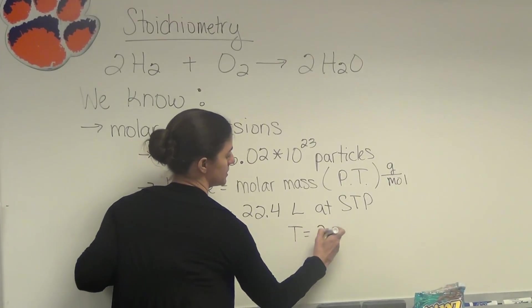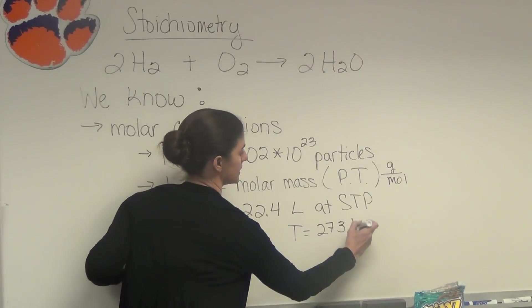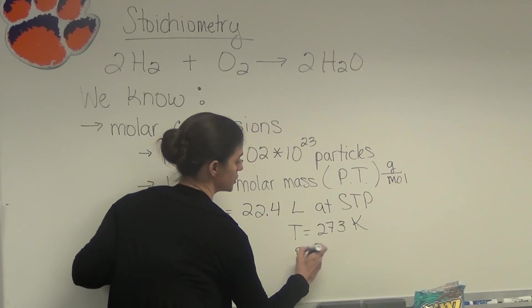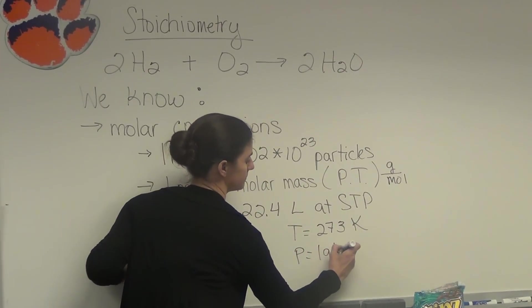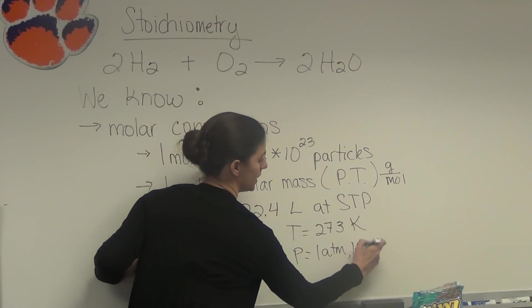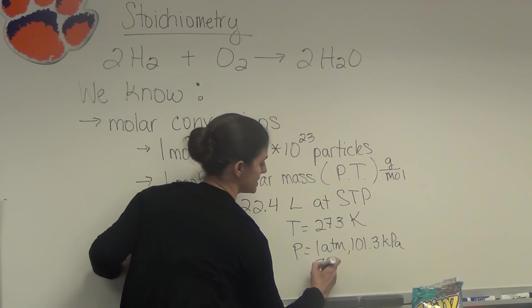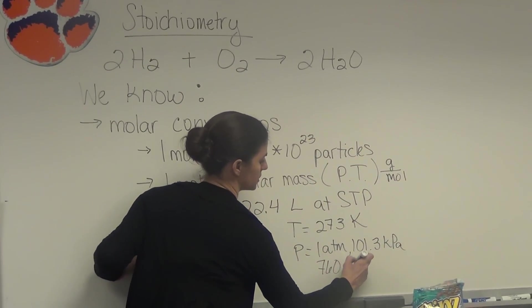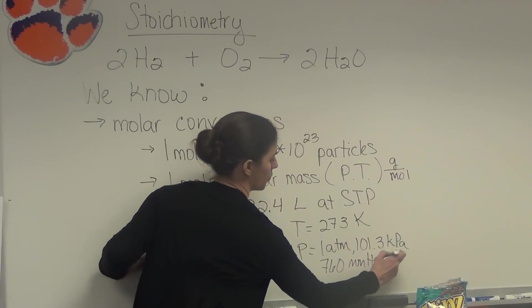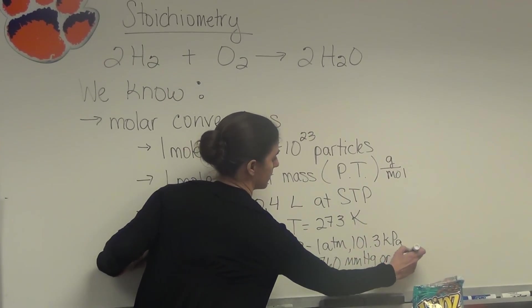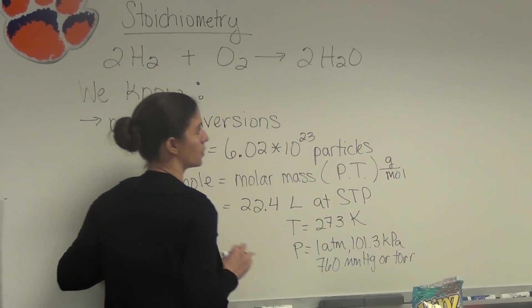The temperature is 273 kelvin. The pressure can be 1 atm, 101.3 kPa, or 760 millimeters mercury, or torr. And that would be 760 torr as well.